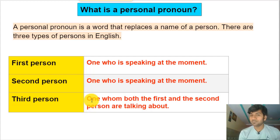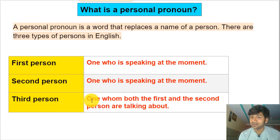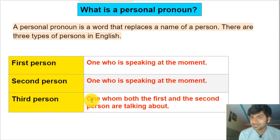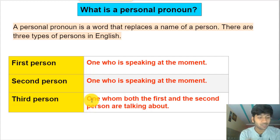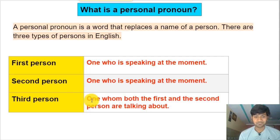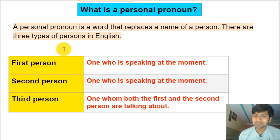The third person may or may not be present where the first and second person are communicating. Even if the third person is present, the first person is not directly sharing details with the third person. The first person is talking to the second person. Now let's understand what pronouns come in each person and how to use them in sentences.